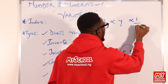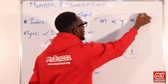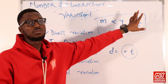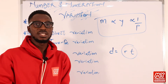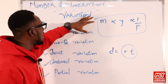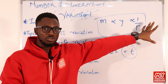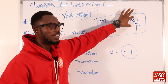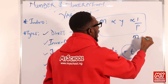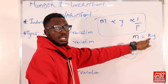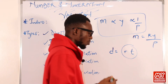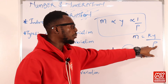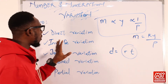In combined variation, you have two different kinds of variations. The equation becomes m = ky/p, where k is the constant of variation. The direct proportion appears in the numerator and the inverse relationship is revealed in the denominator. So in combined variation, at least two types of variation are packed together in one equation.